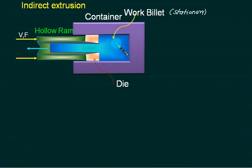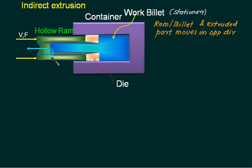This process requires less force compared to direct extrusion. That is the main advantage of indirect. Second difference is that your ram is moving in this direction, and your extruded part is coming in the opposite direction. Billet and extruded part move in opposite directions. Rest equations are same.